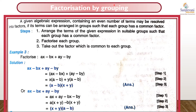Now we will see factorization by grouping. The three steps are: first, arrange all the terms of the given expression in a suitable group by bringing similar terms together. Then factorize each group and take out the factor which is common to each group.